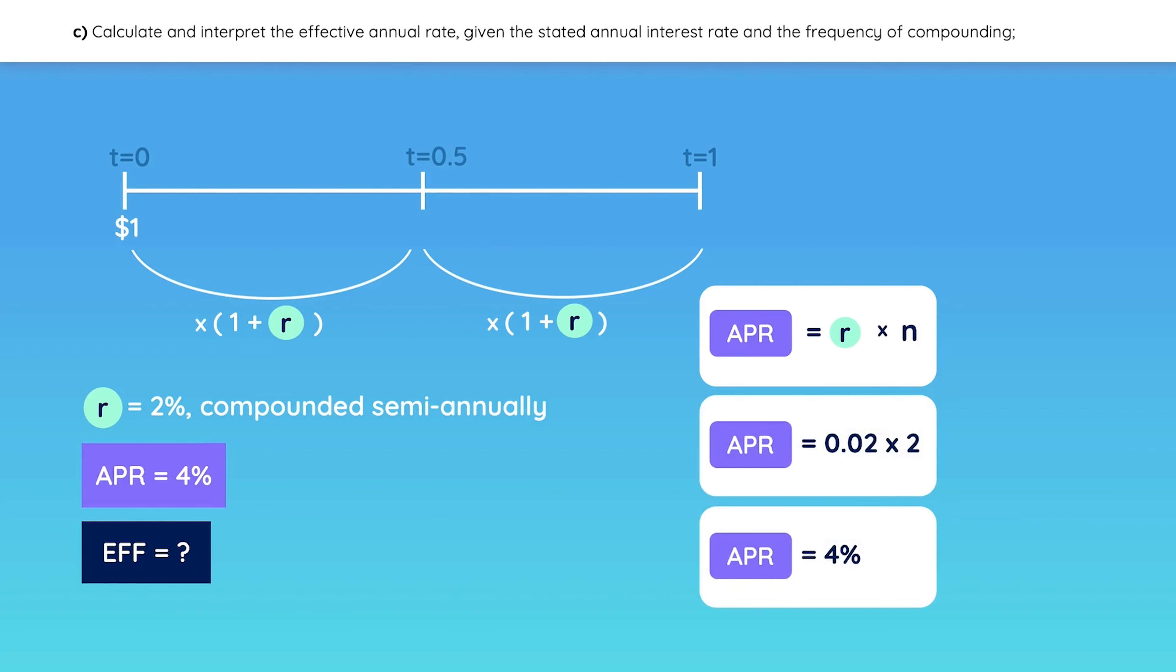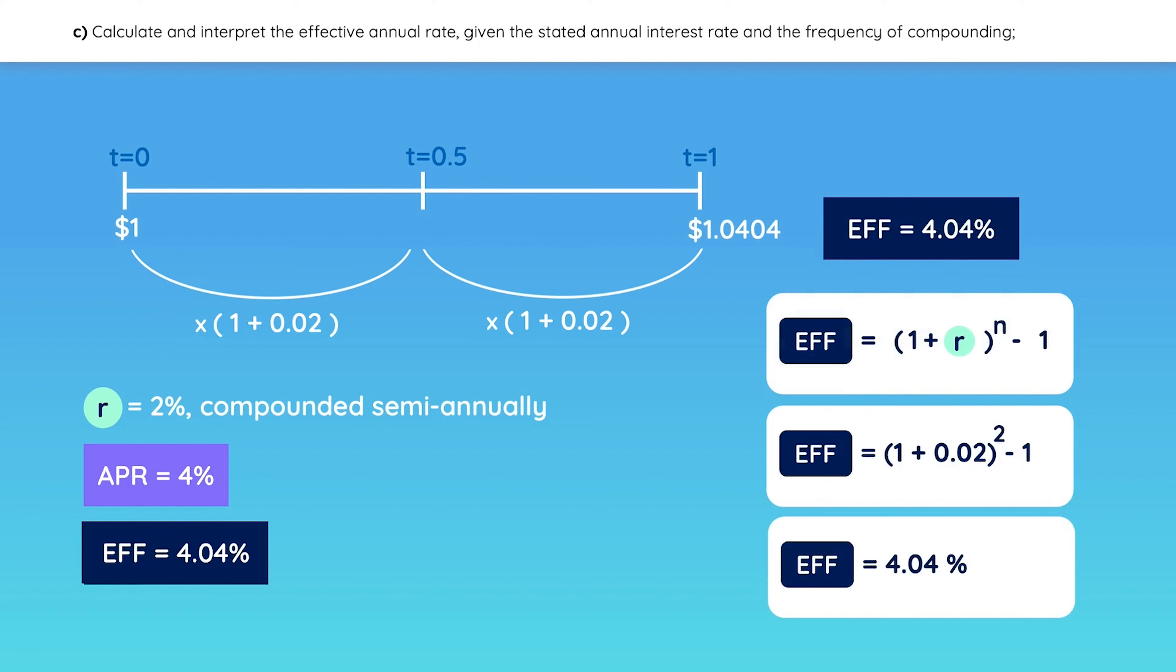And what about the EFF? Well, we have $1, and we're compounding at the periodic rate of 2% for 2 periods. Let's plug in 2% in the timeline. That gives us an effective return of 4.04%. Notice that we could have just used the formula, if you prefer.